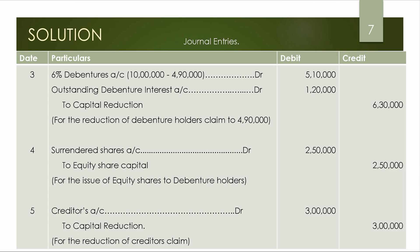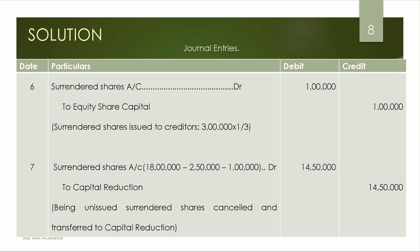Entry complete. Creditors are to reduce their claim to 3 lakhs from 5 lakhs — a reduction of 2 lakhs. We will record: Creditors account to Capital Reduction account for 2 lakhs. One third of 3 lakhs is 1 lakh, satisfied by surrendered shares: Surrendered Shares account to Equity Share Capital account for 1 lakh. Then surrendered shares to equity shares for the balance.